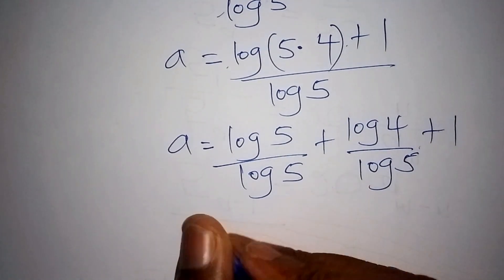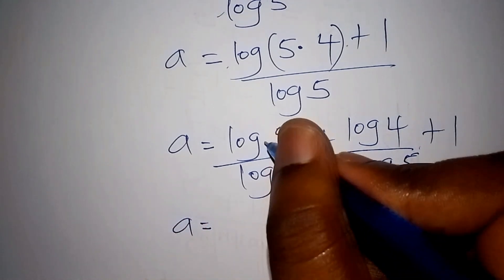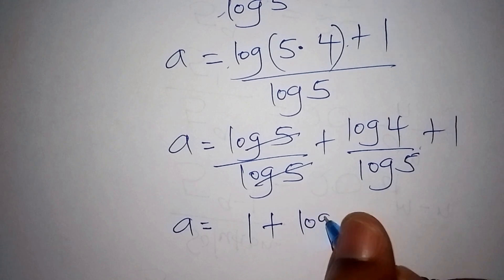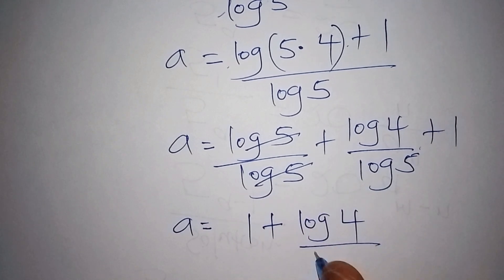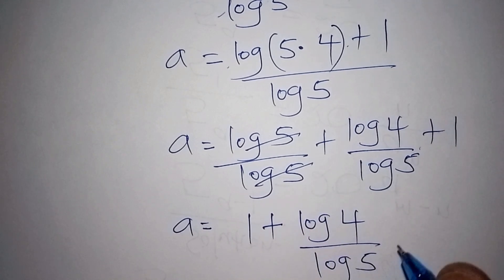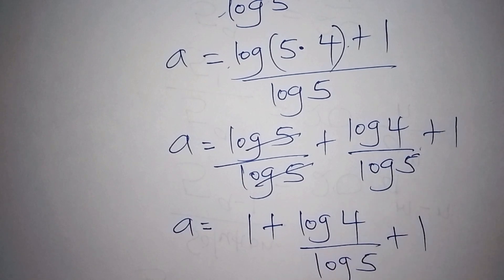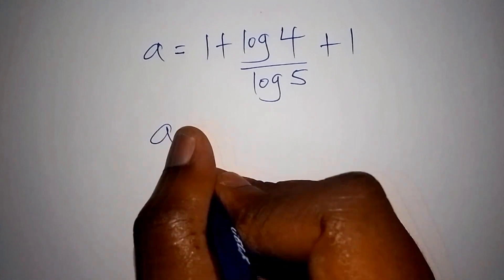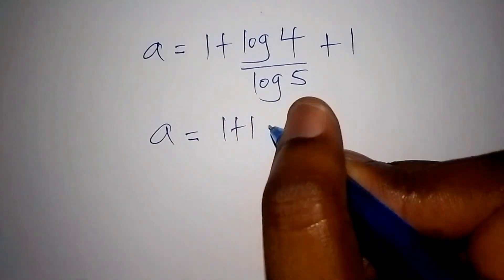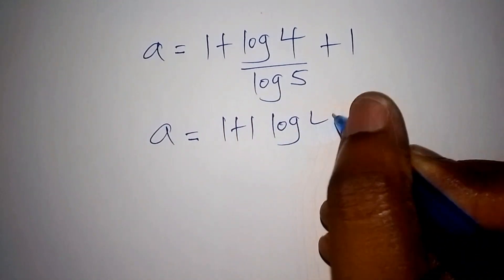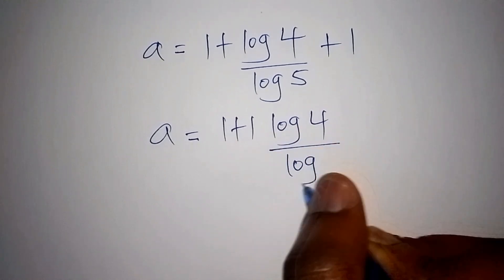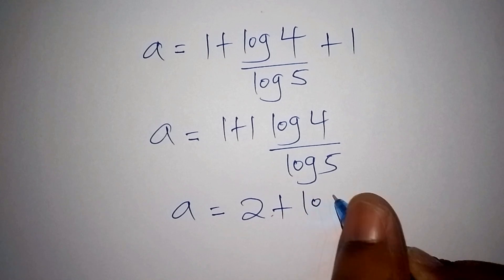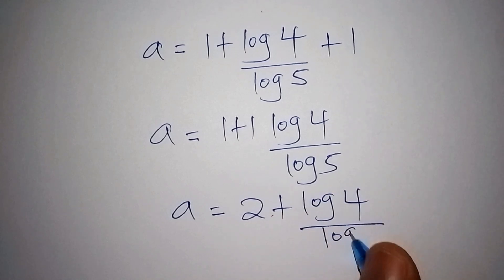Since log 5 over log 5 cancels to 1, we now have a equals 1 plus log of 4 over log of 5, plus 1. Combining the constants, 1 plus 1 equals 2, so a equals 2 plus log of 4 over log of 5.